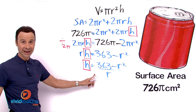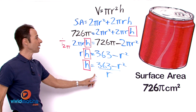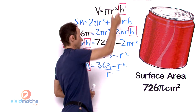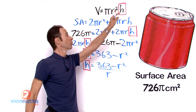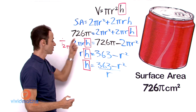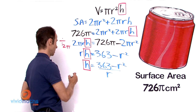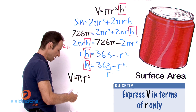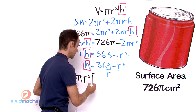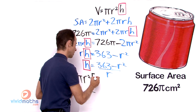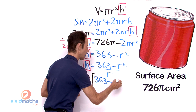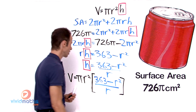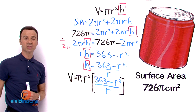Now that we have h expressed in terms of r, we substitute it into the volume formula. Replacing h in V = πr²h, we get: V = πr² × [(363 − r²) / r]. That is our new formula — now let us manipulate it a bit to make it simpler to differentiate.